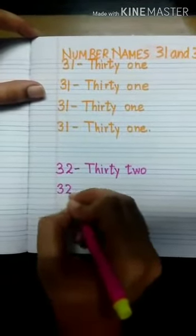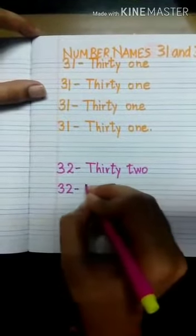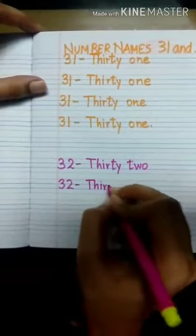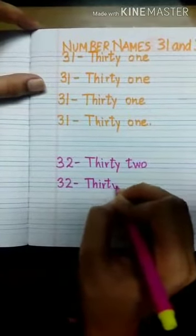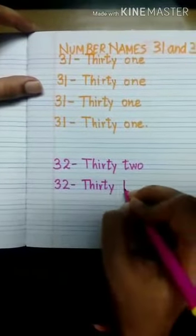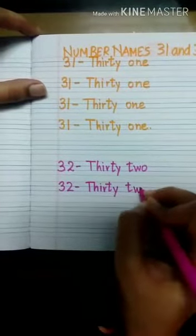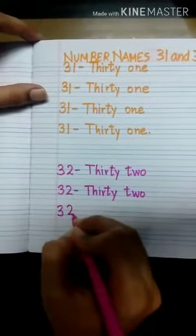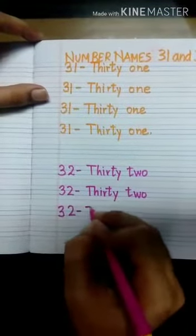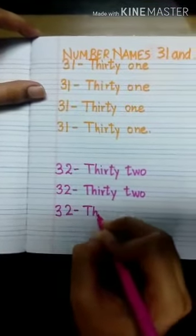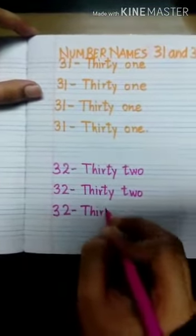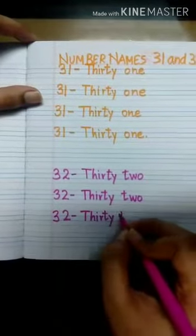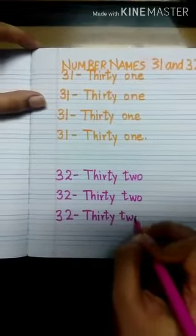3, 2 — a small dash — t, h, i, r, t, y: thirty, t, w, o: 2. Again: 3, 2 — a small dash — t, h, i, r, t, y: thirty, t, w, o: 2. Thirty-two, 32.